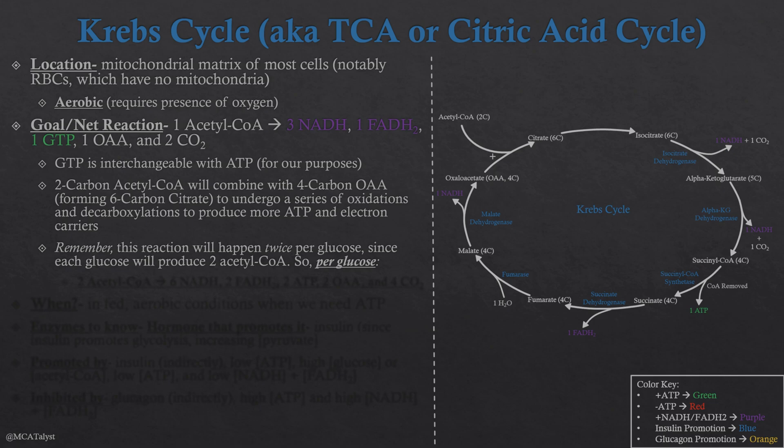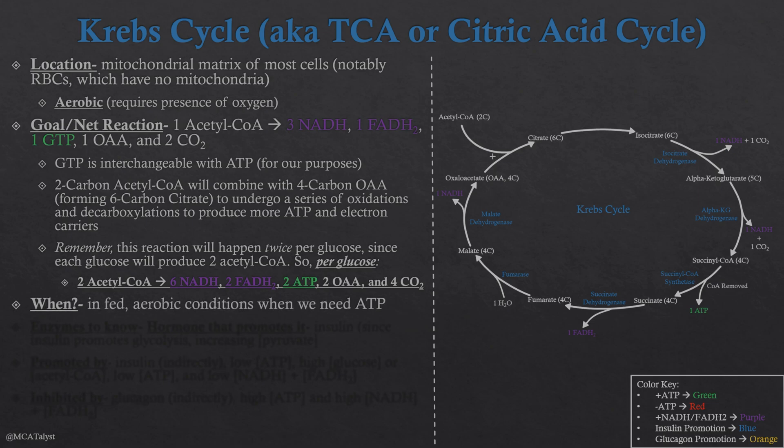This entire cycle happens twice per glucose since each glucose produces two pyruvate, which become two acetyl-CoA. So per glucose, we can double all of these numbers: using two acetyl-CoA will produce six NADH, two FADH2, two ATP (interchangeable with GTP), two oxaloacetate, and four carbon dioxides.